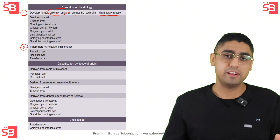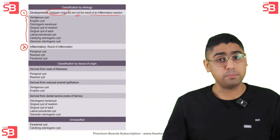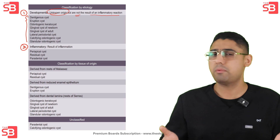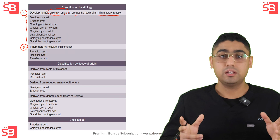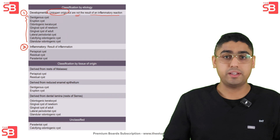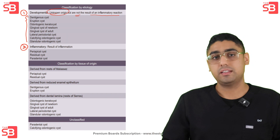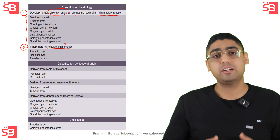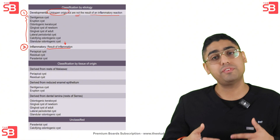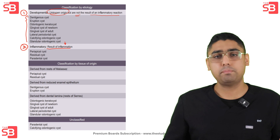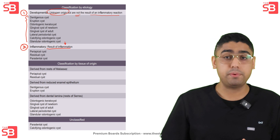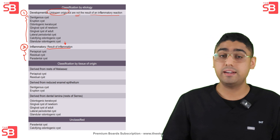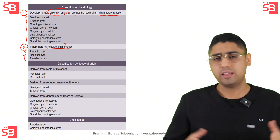Examples of developmental cysts include dentigerous cysts, eruption cysts, and odontogenic keratocysts, to name a few. The second group is inflammatory cysts. As the name suggests, these form because of inflammation. Common examples include periapical cysts, residual cysts, and paradental cysts.